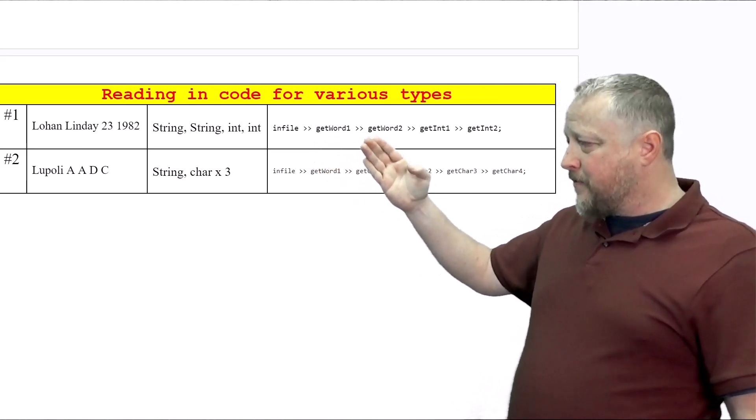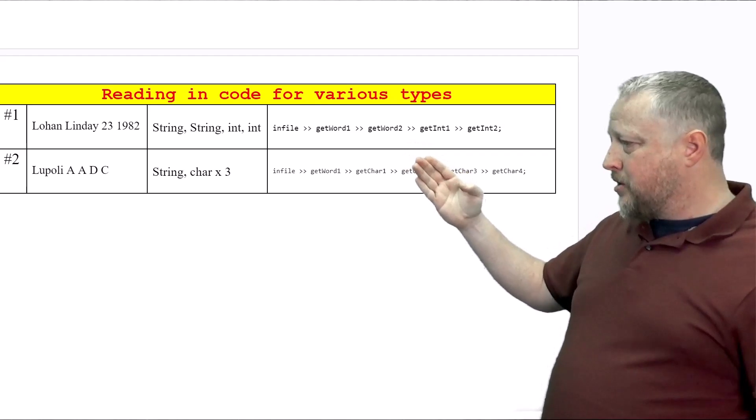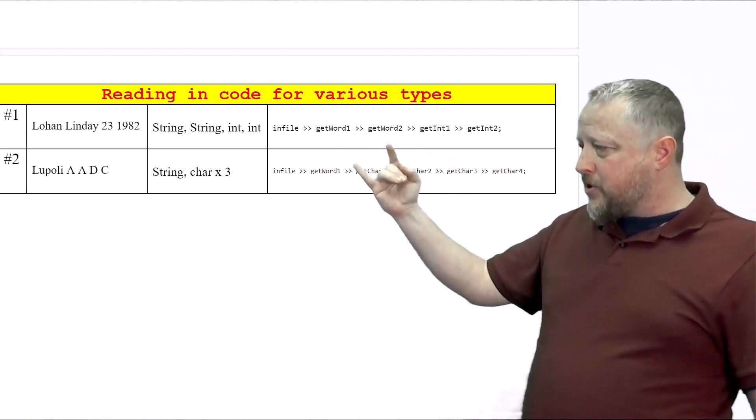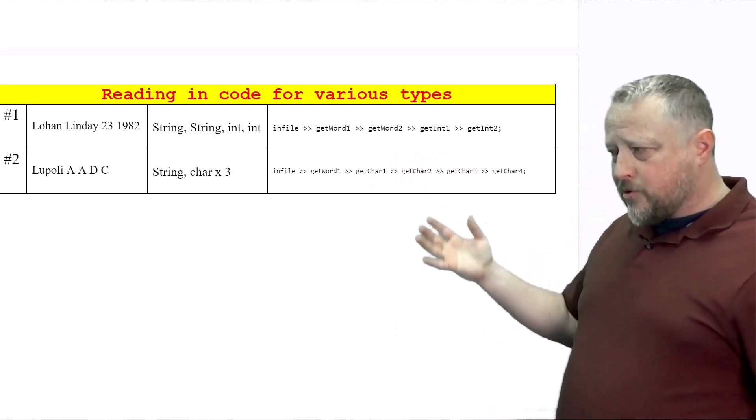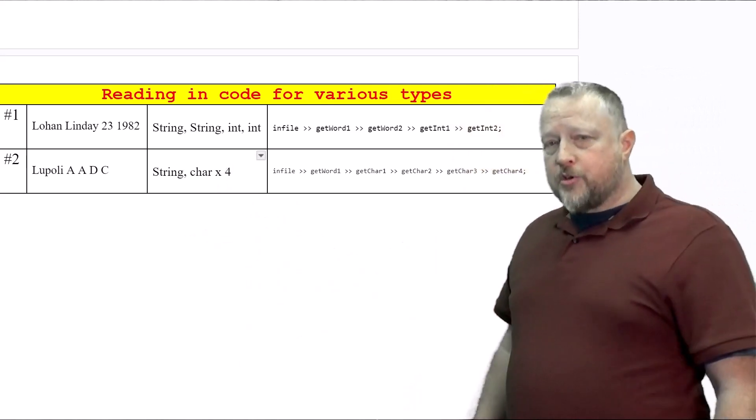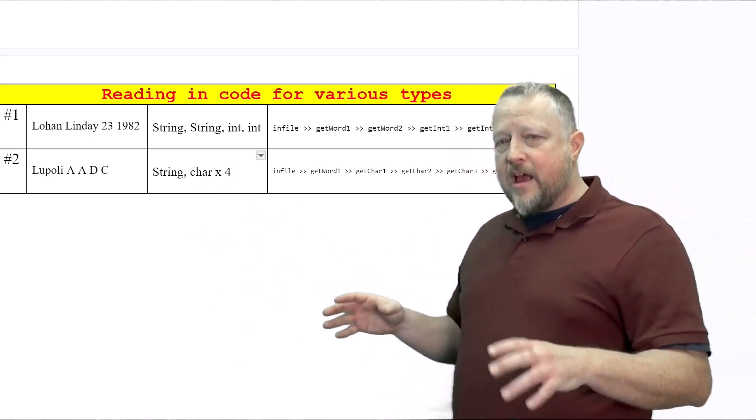Get Word, to be honest with you, probably should be last name, first name, age, and year. But I think what I'm trying to do is just show you it's going to be the two strings first and then two integers afterwards. So naming is suspect on this as well. But anyway, for number two, we have a string and then we have four characters.